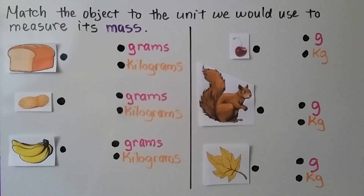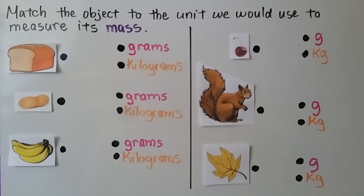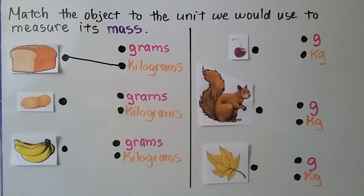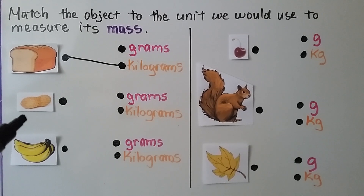We need to match the object to the unit we would use to measure its mass. Would we use grams or kilograms to measure the mass of a loaf of bread? Keep in mind, one paper clip is a gram. If you said kilograms, you're right. What about a peanut in a shell? If you said grams, you're right.